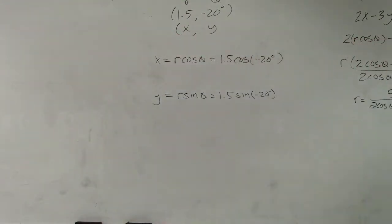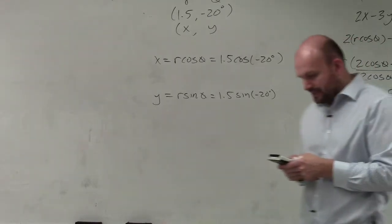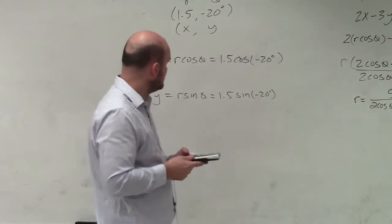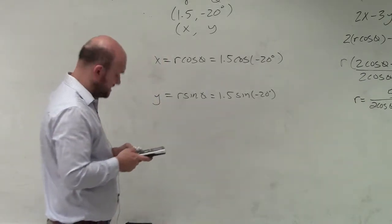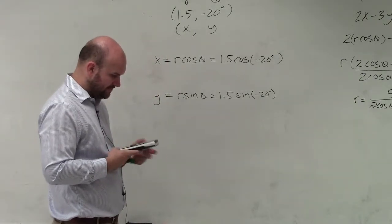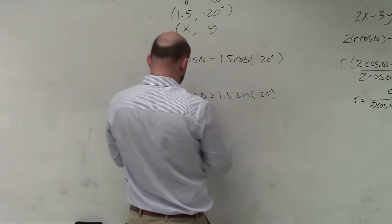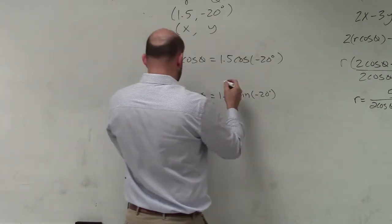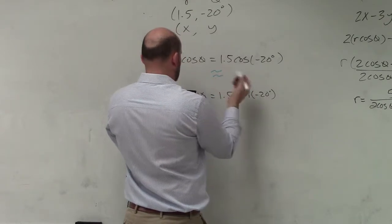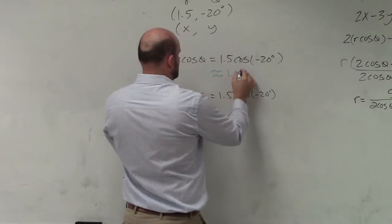So just go to my handy dandy calculator. Just make sure my mode is in degrees, not in radians. And I just do 1.5 times the cosine of negative 20. And I get whatever I round to. Let's just round to the nearest tenth.